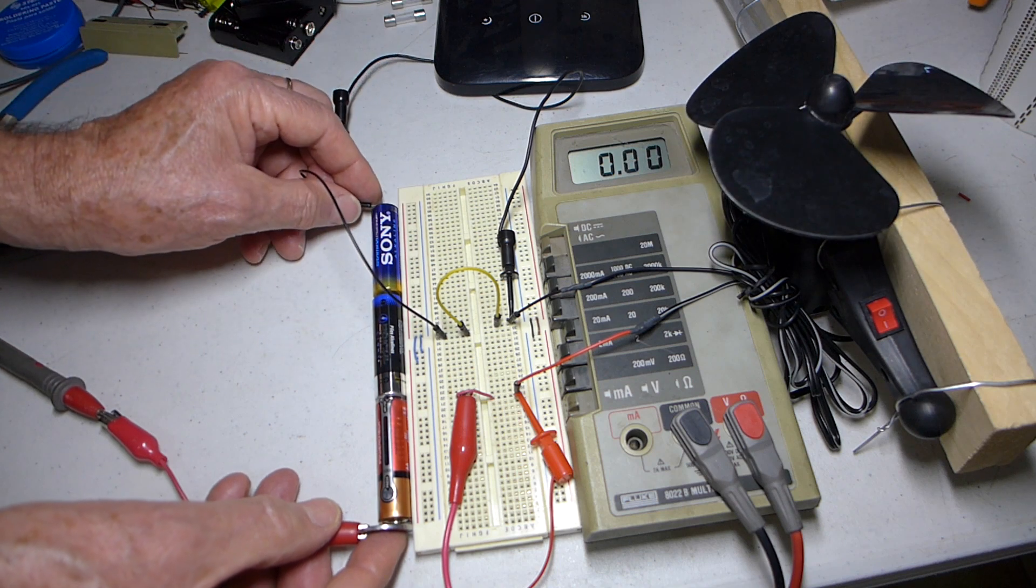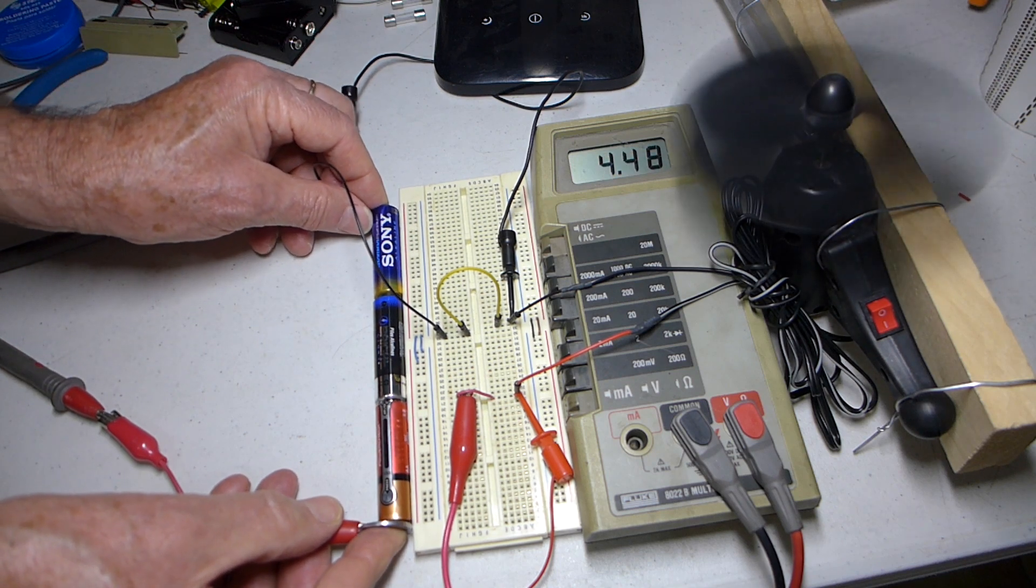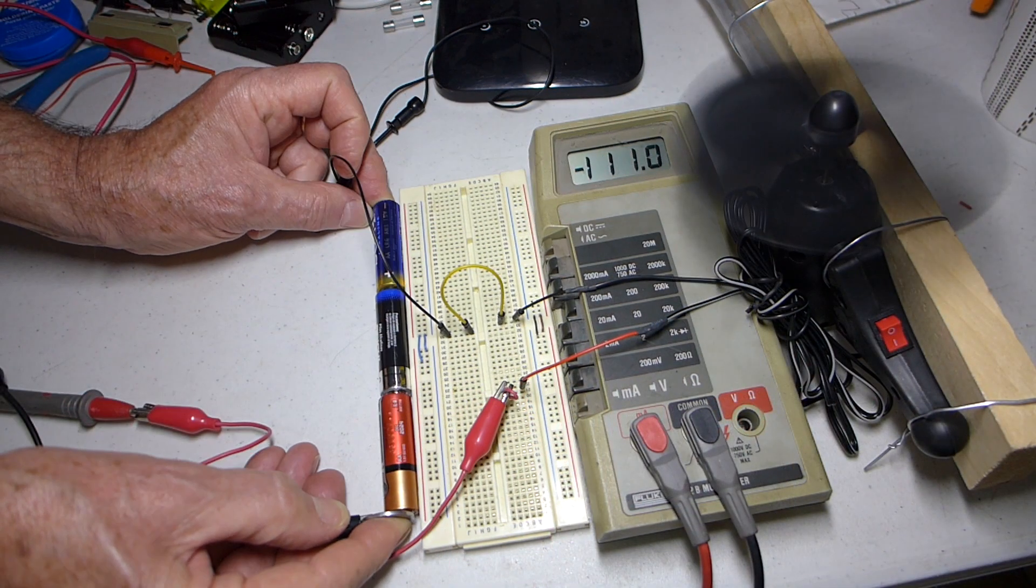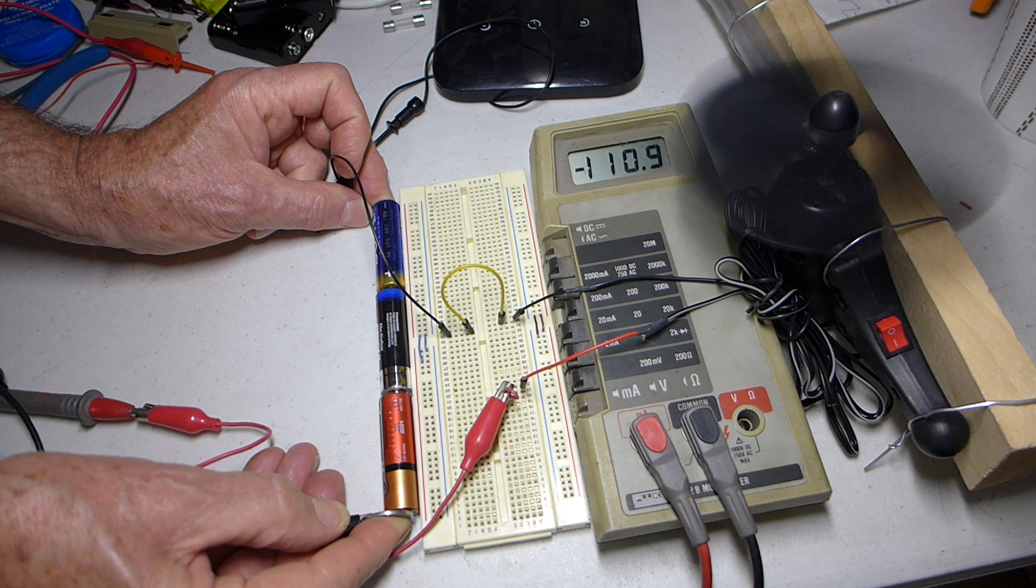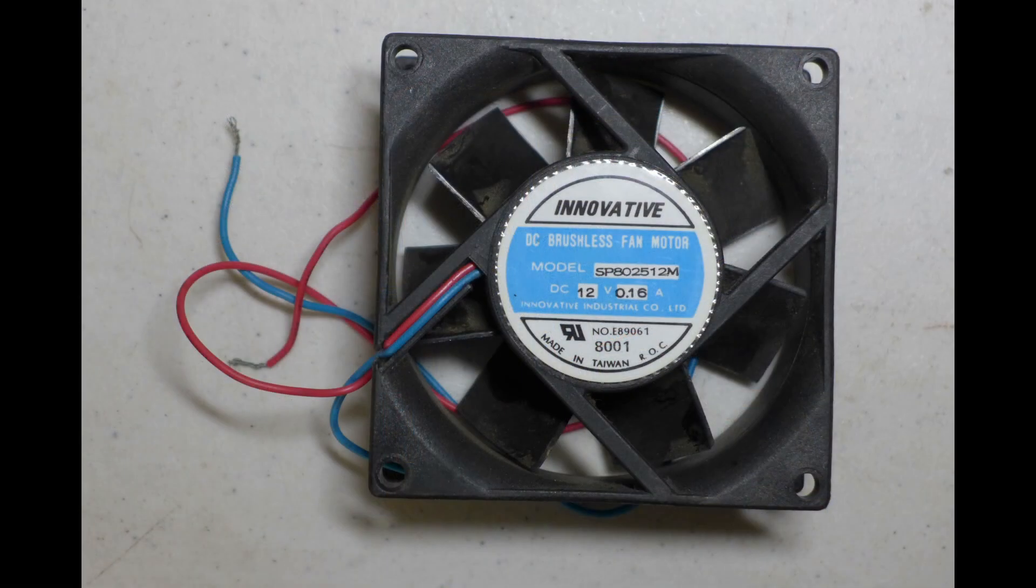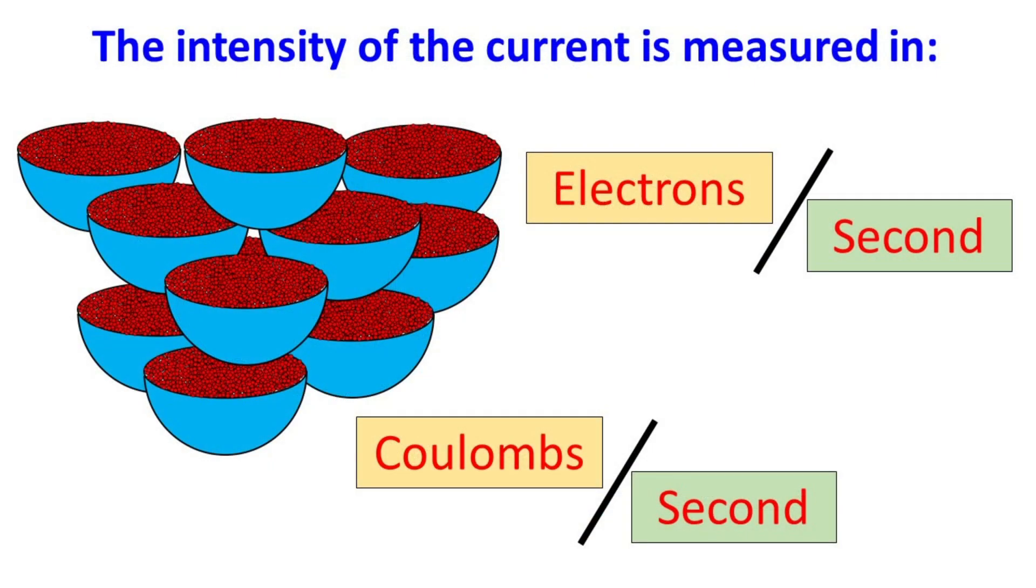What if we connect three batteries in series? The voltage rises to 4.5 volts and the current to 0.111 coulombs per second. And so you can increase the voltage so that the electrons pass faster until the motor burns. The manufacturer specifies the voltage to which an appliance must be connected to work as expected. For example, when this fan is connected to 12 volts, it will pass a current of 0.16 coulombs every second.